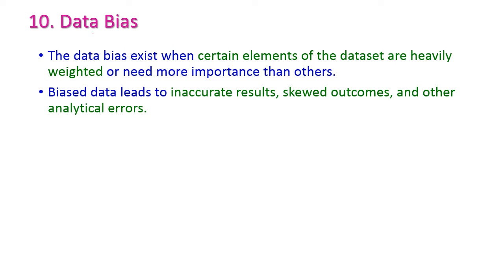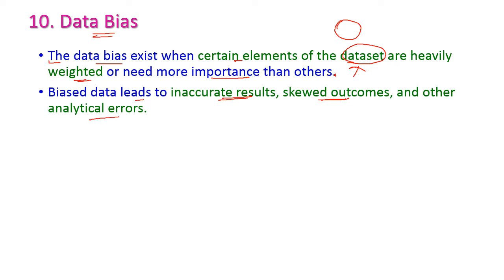The last issue is data bias. Data bias exists when certain elements of a data set are heavily weighted or given more importance than others. Only few data items are frequently accessed, meaning equal weightage is not given to the data set, causing data bias. This leads to inaccurate results, skewed outcomes, and other analytical errors.